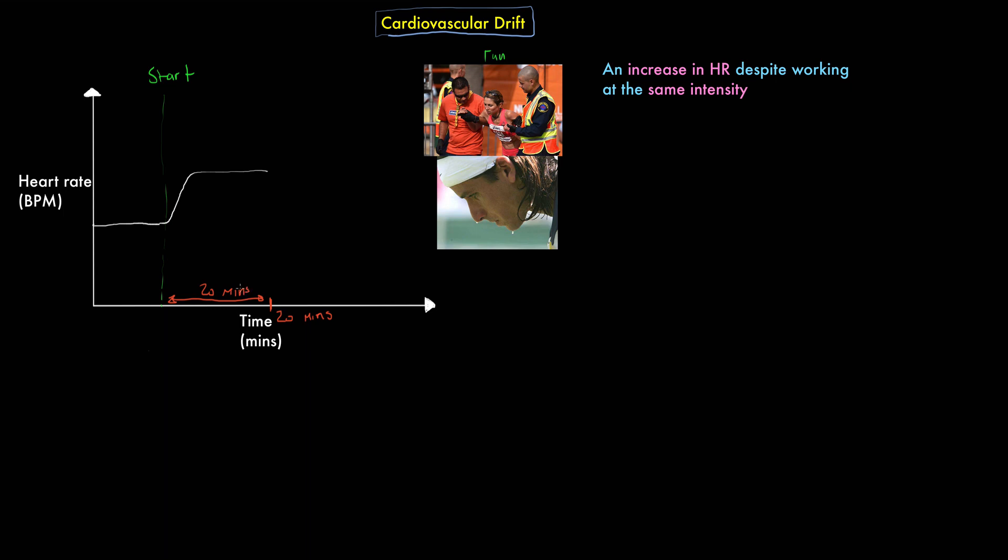Well what we find in a lot of cases with a lot of athletes is rather than that plateau remaining, the heart rate seems to drift upwards, drift drift drift, and then of course we get our recovery characteristics which you already know a lot about. So therefore the question has to be posed, why is this cardiovascular drift occurring, why is that actually happening?